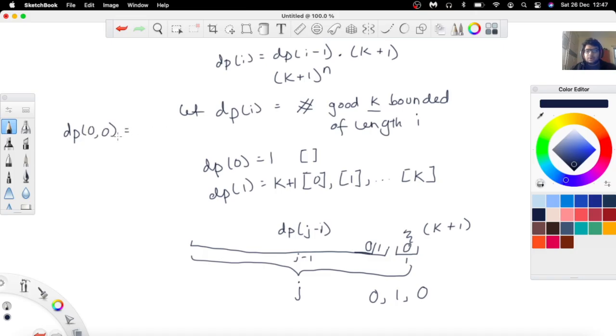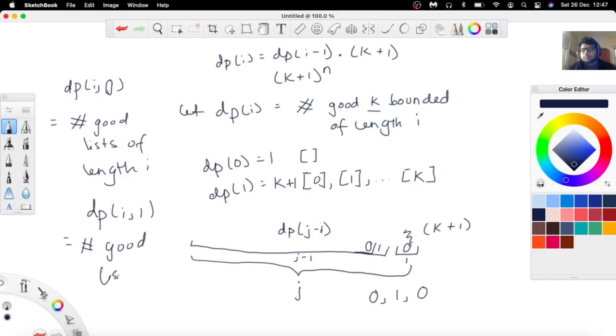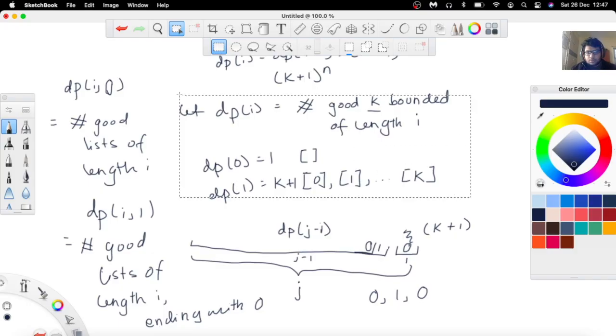So let's say dp(i, j) equals, or dp(i, 0) equals the number of good lists of length i. And dp(i, 1) equals the number of good lists of length i ending with zero.